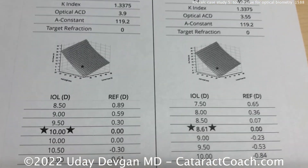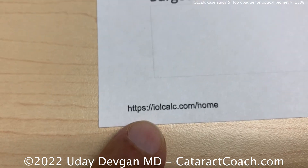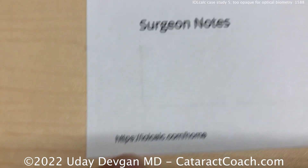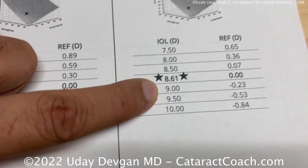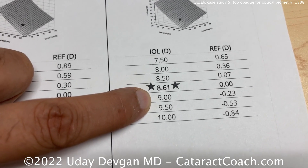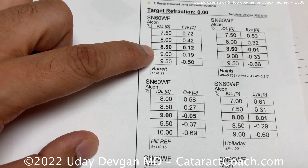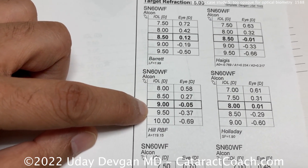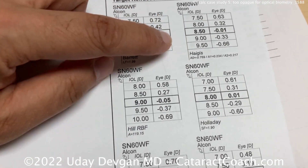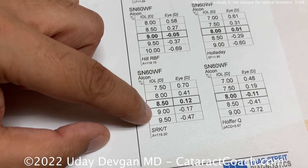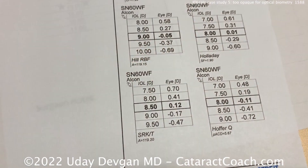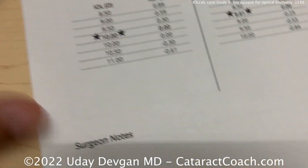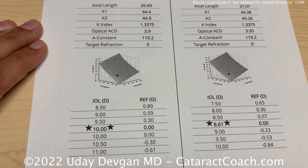I'm using our free iolcalc.com for the calculations. The left eye is going to be a nine diopter lens — this is with the Ladas Super Formula AI. You can see that nine diopters is also a pretty good choice from Barrett, Hill, Haag, Holladay, or for longer axial length, SRK/T — all reasonable.